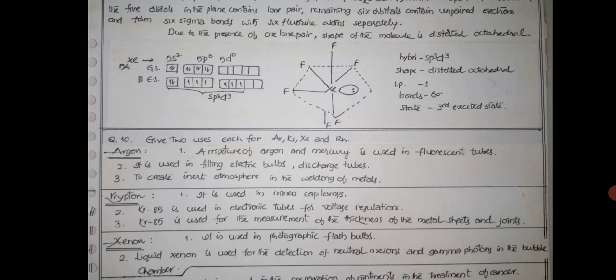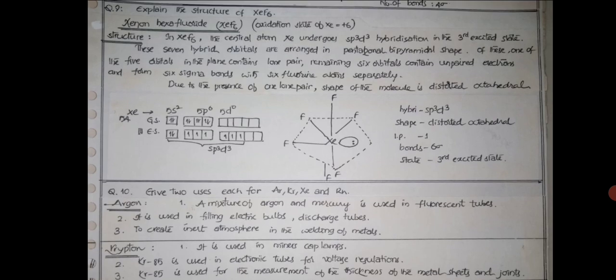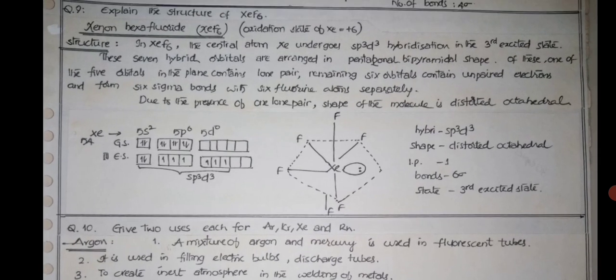Now we will go with the xenon hexafluoride structure. Oxidation state of xenon is plus 6. In XeF6, xenon atom undergoes sp3d3 hybridization in the third excited state. Six fluorines are there. In order to form six bonds, there should be six unpaired electrons.